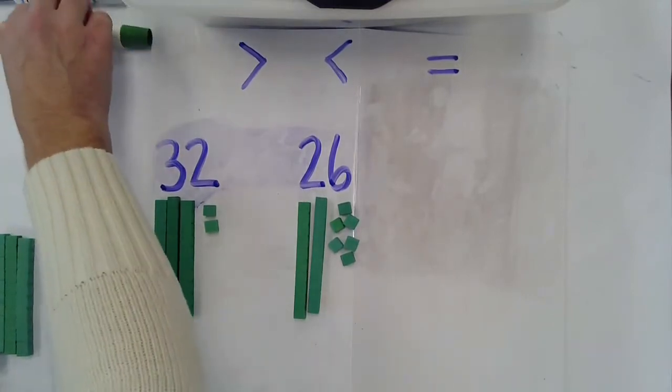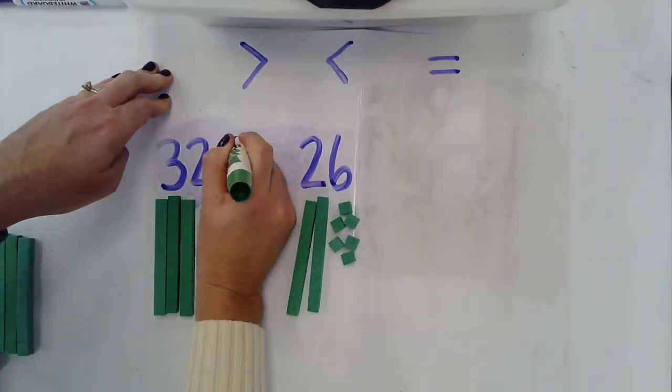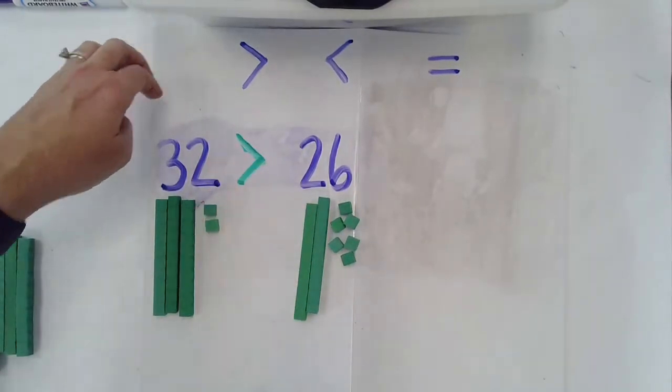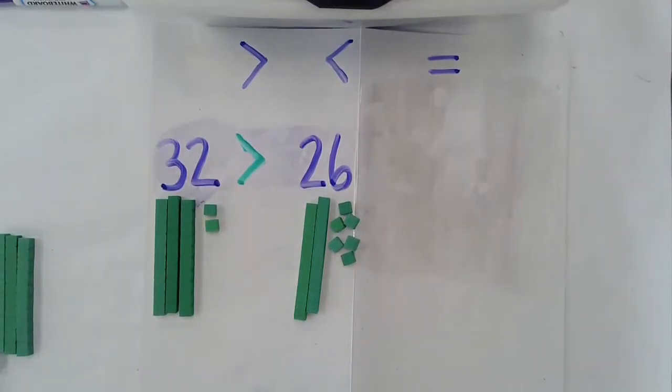So I'm going to go ahead and use my symbol here and this is a greater than symbol and notice how it kind of looks like an alligator's mouth and it's eating the biggest piece.